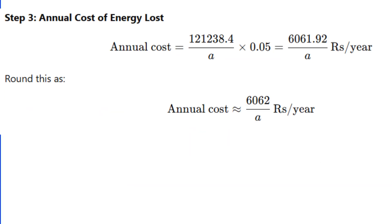Now calculate the cost of this energy loss. 5 paisa per unit means 0.05 rupees per kilowatt hour. So, annual cost of energy loss equals 6061.92 divided by A rupees.